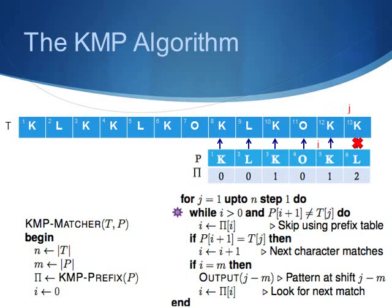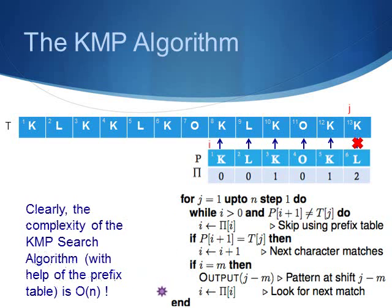As we have a mismatch and as i is greater than 0, our while condition is satisfied so we set i as pi[i] which is 1. However, as we have reached the end of the string which is the termination condition for our for loop, we have reached the end of the algorithm. As we go through every character in the main string only once, the complexity of the KMP search algorithm is linear as we said before.